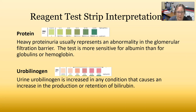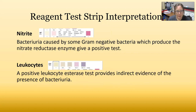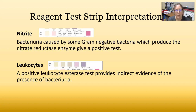Urobilinogen is increased in any condition that causes an increase in the production or retention of bilirubin, tying it back to liver health. For nitrites: some gram-negative bacteria produce the nitrate reductase enzyme and give a positive test. The nitrite test could be negative and bacteria may still be present on microscopy — they're just not likely to be gram-negative. For leukocytes: a positive leukocyte esterase test provides indirect evidence of bacteria because white cells are present, fighting the infection and producing leukocyte esterase, which is what this test detects.